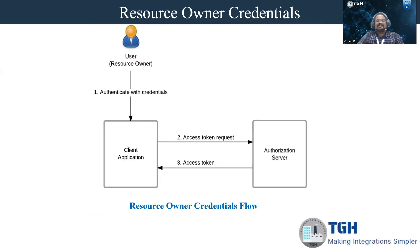In case of resource owner credentials, there is a user who is a resource owner, having a username and password. The user provides the username and password for authentication. The client application, on behalf of the user, makes a call to the authorization server for the access token, containing the client ID, client secret, as well as the username and password. The server validates this request, returns an access token, and using that access token a call goes to the resource server, which then provides the resource.